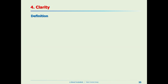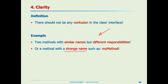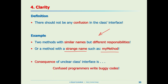The next C is clarity. Your class interface or API should not be confusing. For example, having two methods with the same name doing different things is not acceptable. Or having strange method names like 'myMethod' that don't convey purpose. If you confuse the programmers who use your class, they will produce buggy code. When you design something for other developers to use, do not confuse them.